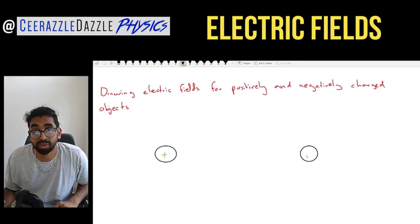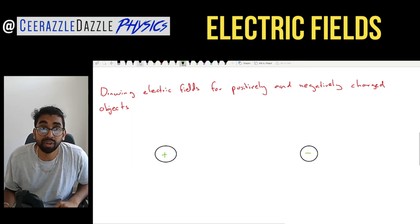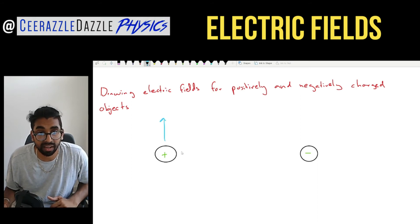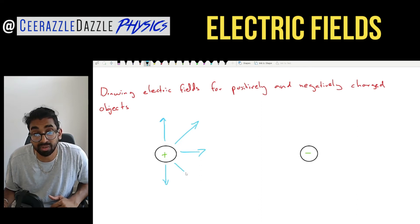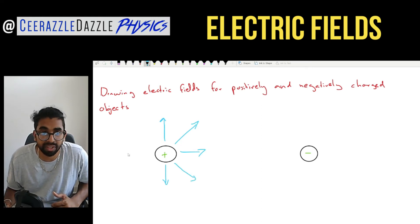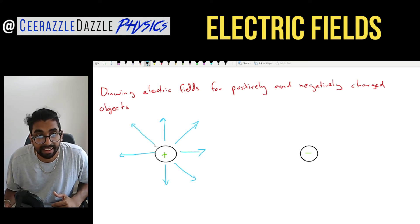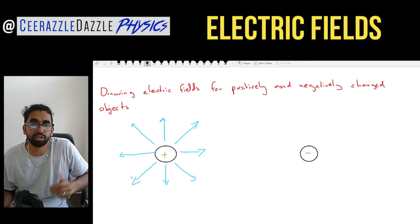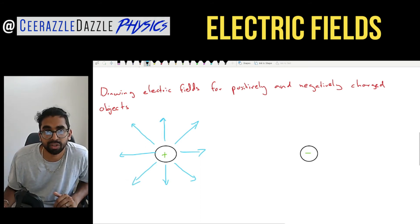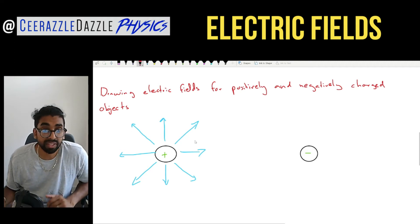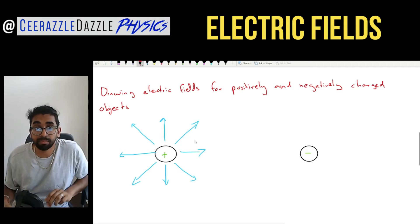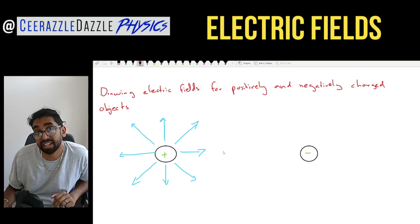This one is positively charged, this one is negatively charged. For the positive one, we already know the arrows move away. In the exam make sure you use a ruler, your arrows are clear, and the lines don't cross. For the positive charge the arrows go away because a positively charged particle would move in that direction — it would be repelled away.